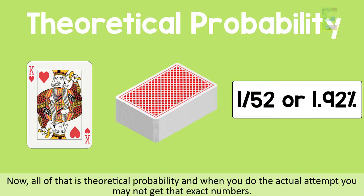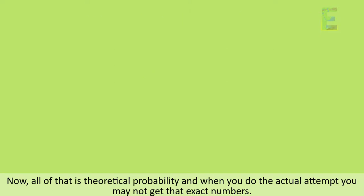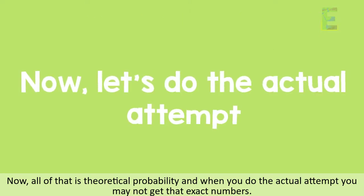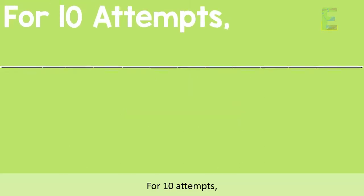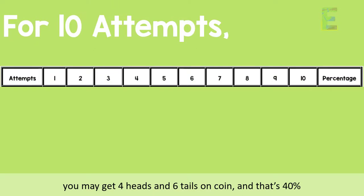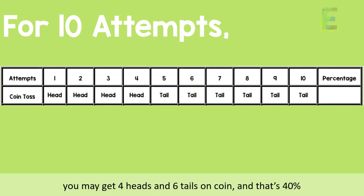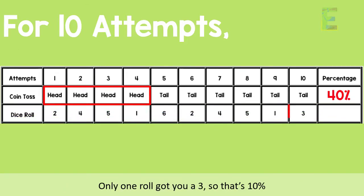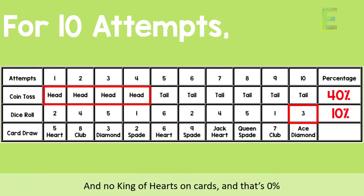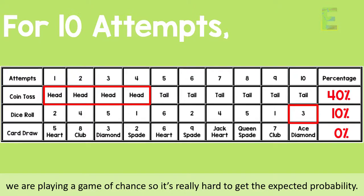Now, all of that is theoretical probability, and when you do the actual attempt you may not get those exact numbers. For 10 attempts, you may get four heads and six tails on a coin — that's 40%. Only one roll got you a three — that's 10%. And no king of hearts on cards — that's zero percent.